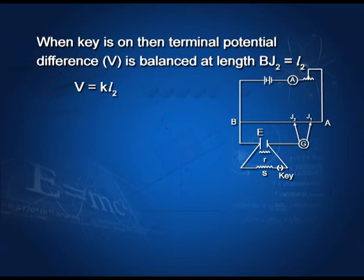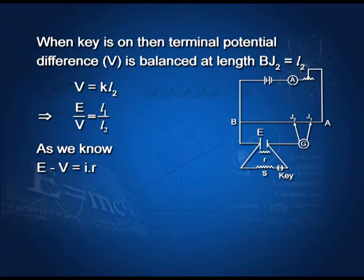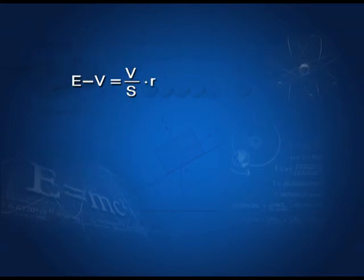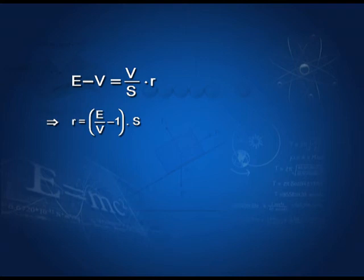Dividing EMF by terminal potential difference, we get E/V = L1/L2. As we know, E − V = I·r, where r is the internal resistance, and I = V/S. So E − V = (V/S)·r, which gives r = (E/V − 1)·S. Substituting the value of E/V, we get the internal resistance of the cell: r = (L1/L2 − 1)·S.